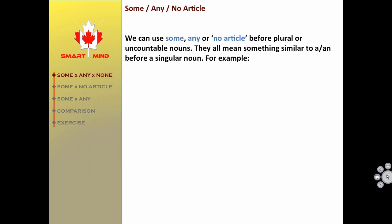We can use some, any, or no article for plural or uncountable nouns. They all mean something similar to 'a' or 'an' for a singular noun. For example: 'Can we have a banana?' — one banana, but any one is okay.